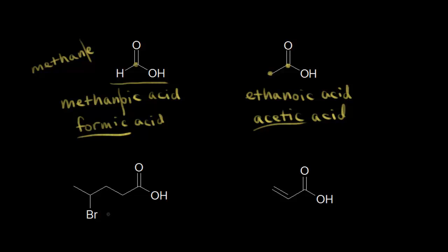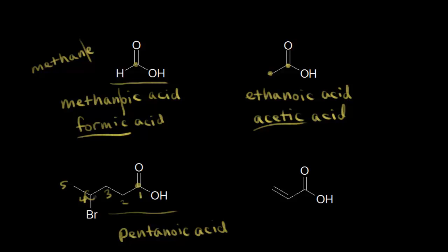Let's name this next one. You want to find the longest carbon chain that includes the carbon of your carboxylic acid. That makes the carboxylic acid carbon number one, then two, three, four, five — so a five-carbon carboxylic acid, which would be pentanoic acid. We also have a bromine on carbon four, so the full IUPAC name would be 4-bromopentanoic acid.